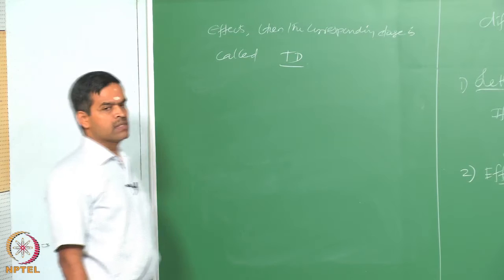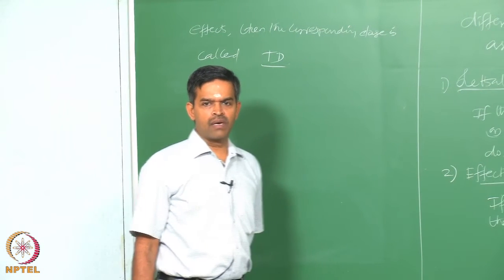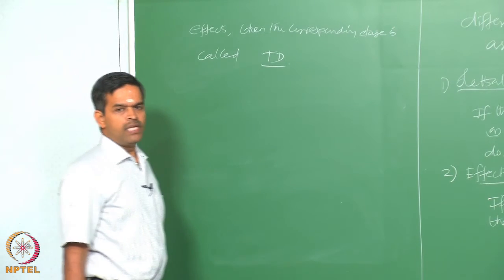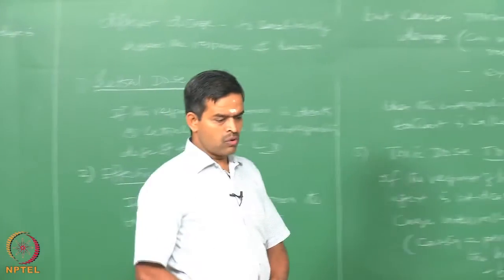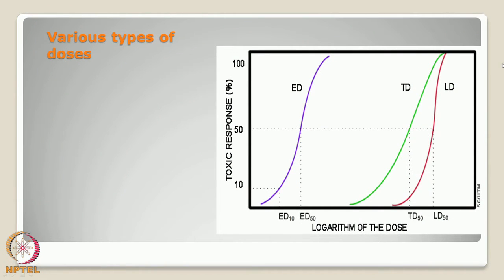Various types of doses are generally expressed on a logarithmic curve. Please pay attention to the figure shown on screen, which indicates different types of doses on a log scale. The y-axis indicates percentage of toxic response from 0 to 100, and the x-axis indicates the logarithm value of the corresponding dose. The blue curve indicates effective dose, the green curve indicates toxic dose, and the red curve indicates lethal dose. The corresponding values of LD50, TD50, ED50, and ED10 are marked.